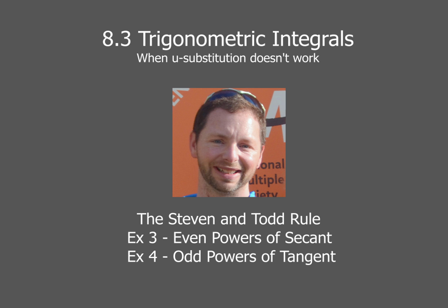Steven is like secant and even put together, and Todd is going to be like tangent and odd put together. So we will look for those things when we analyze an integral.